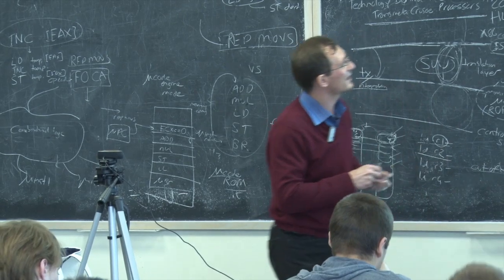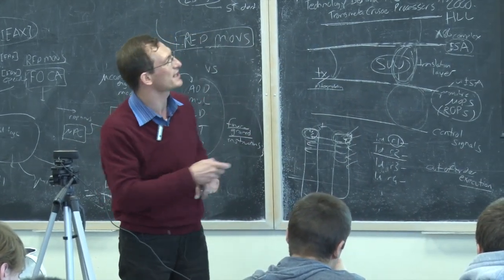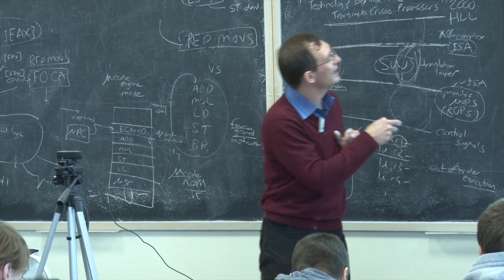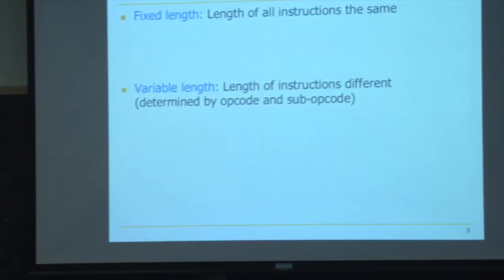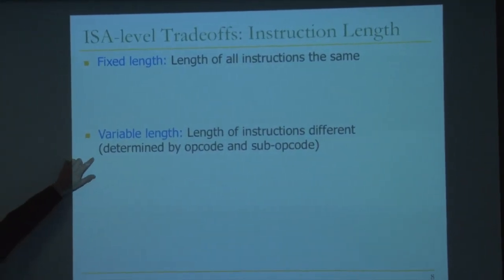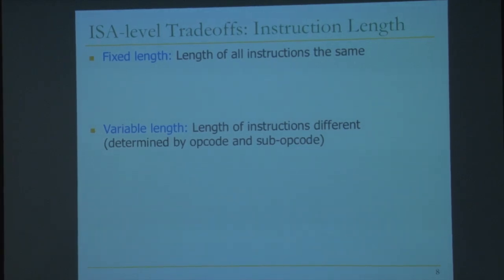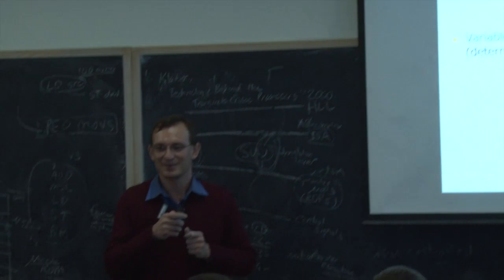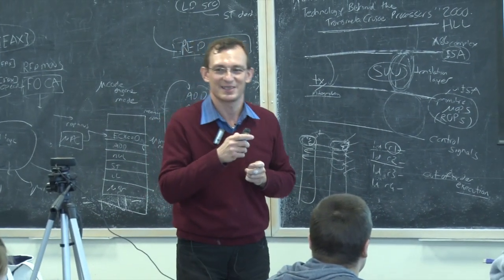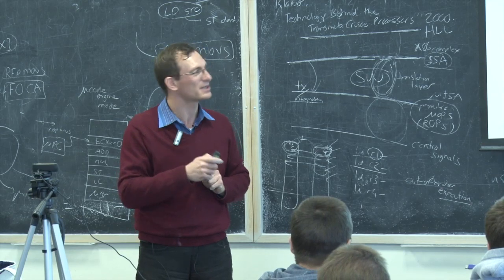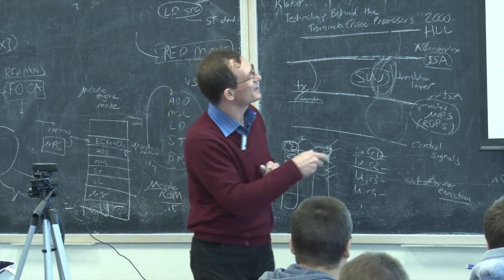Another ISA-level trade-off related to CISC versus RISC is instruction length. How long should the instructions be? If you have fixed length, all instructions are the same length. Variable length is the opposite — length is determined by the opcode, sub-opcode, and potentially many other things. What is the upside of fixed length? Simple decoding. Also easier alignment, so it's easier to fetch. Simpler decoding in general. Easier to decode a single instruction in hardware, and easier to decode multiple instructions concurrently.